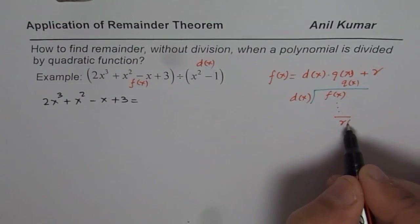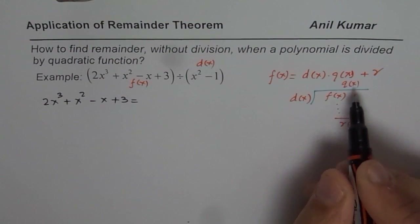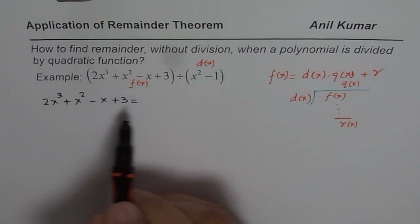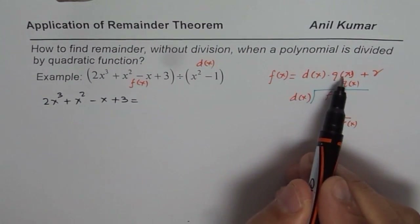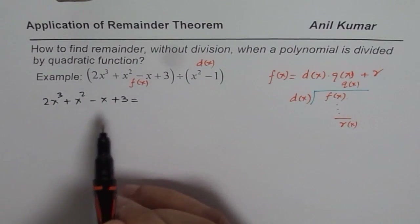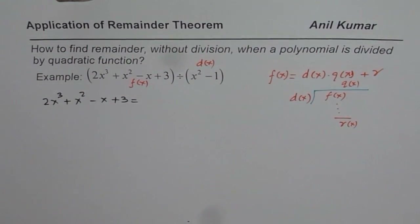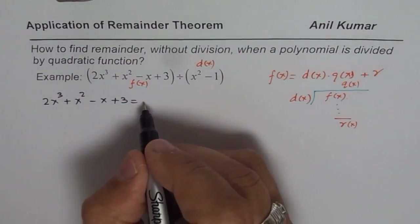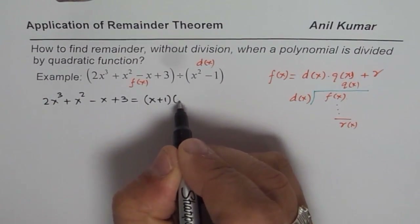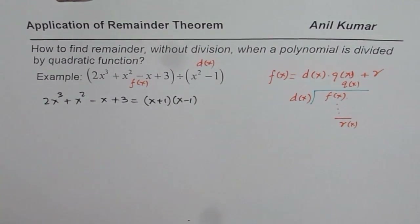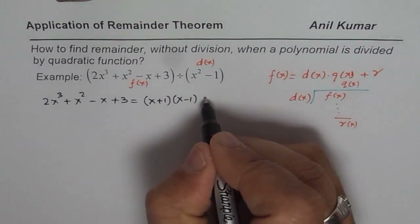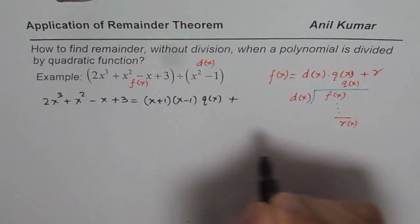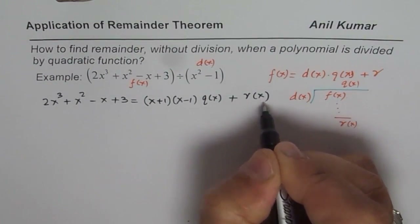We need to find what the remainder is, and we also don't know what the quotient is. We will write the division statement: f(x) equals divisor into quotient plus remainder. The divisor is x² - 1, which I can write as (x + 1)(x - 1). The quotient I will write as q(x), and the remainder as r(x).